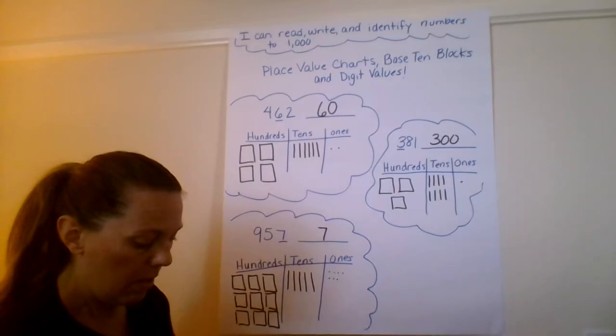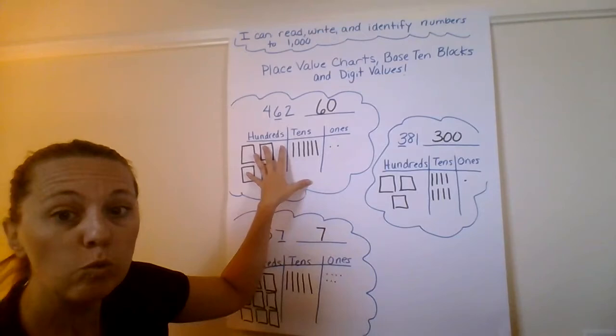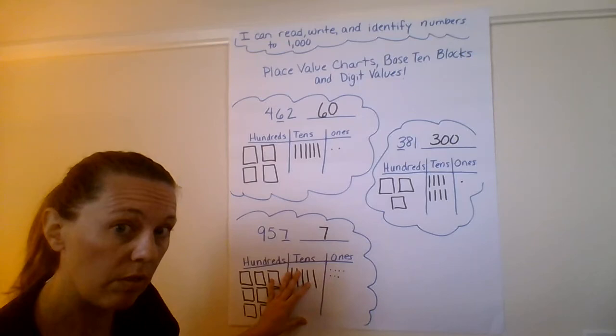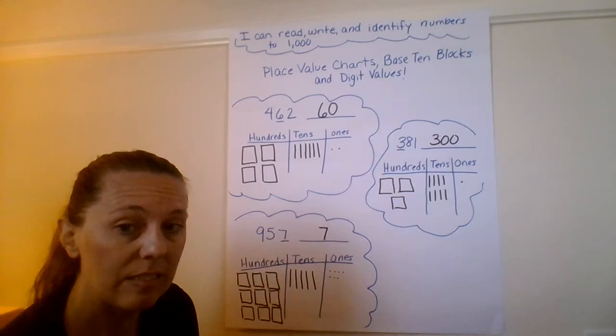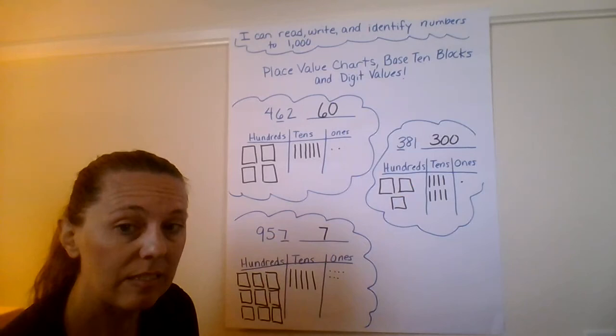So my friends, we are using our place value blocks, our base 10 blocks. We are going to draw our representation inside of our place value chart. We're going to identify the values of the underlying digits. Remember the value of the digit changes based on the place. If you need to review that, go back to our vocabulary video at the beginning of this playlist. I'll see you guys tomorrow. Bye.